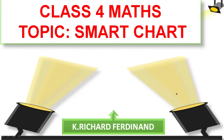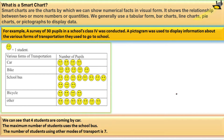Hi friends, today we are going to see Class 4 Maths. The topic is smart chart. What is a smart chart? Smart charts are charts by which we can show numerical facts in visual form. They show the relation between two or more numbers or quantities.